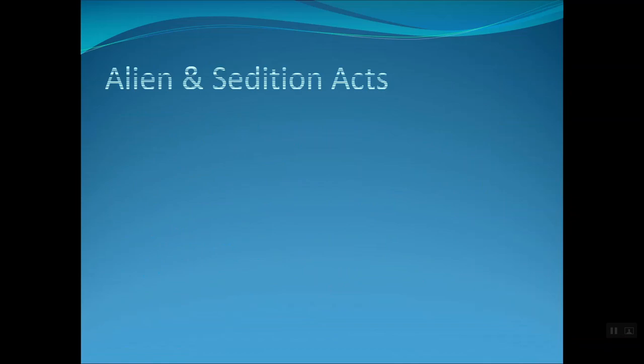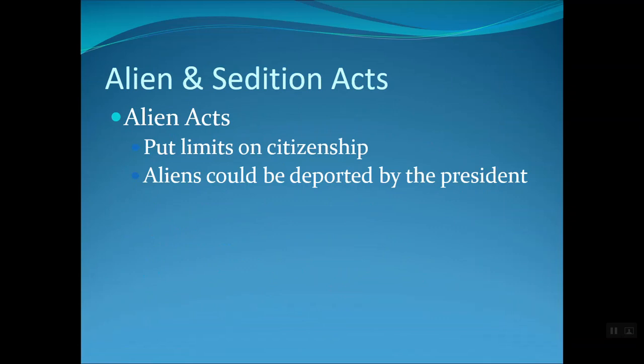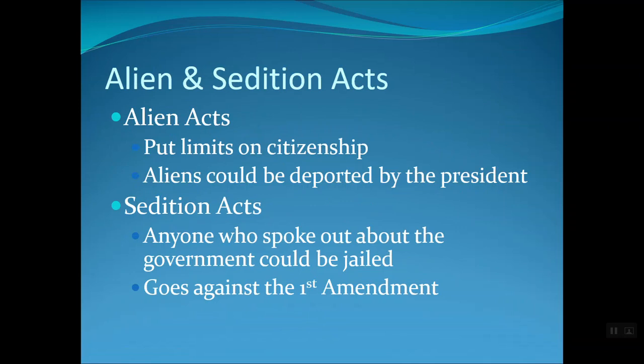Democrat-Republicans were not pleased with the quasi-war or the handling of the French, and were very critical of Adams' administration. Adams was concerned about this criticism and about possible spies living in the United States, so he and his Federalist Congress enacted the Alien Sedition Acts. The Alien Acts put limits on citizenship, requiring 14 years of residency instead of seven to apply, and allowed the president to deport non-citizens. The most contentious issue was the Sedition Acts — anyone who spoke out against the government could be jailed, which goes against the First Amendment. Several Democrat-Republican publishers and journalists were jailed for criticizing the government and the president.